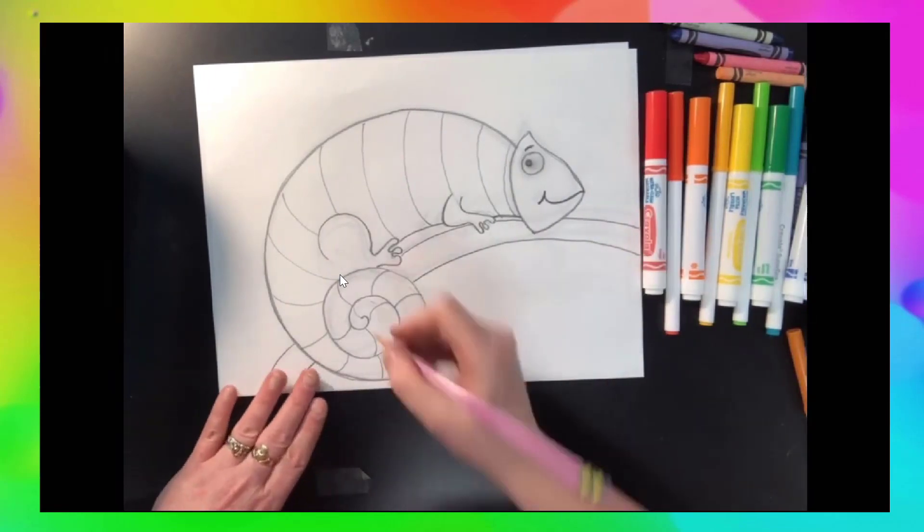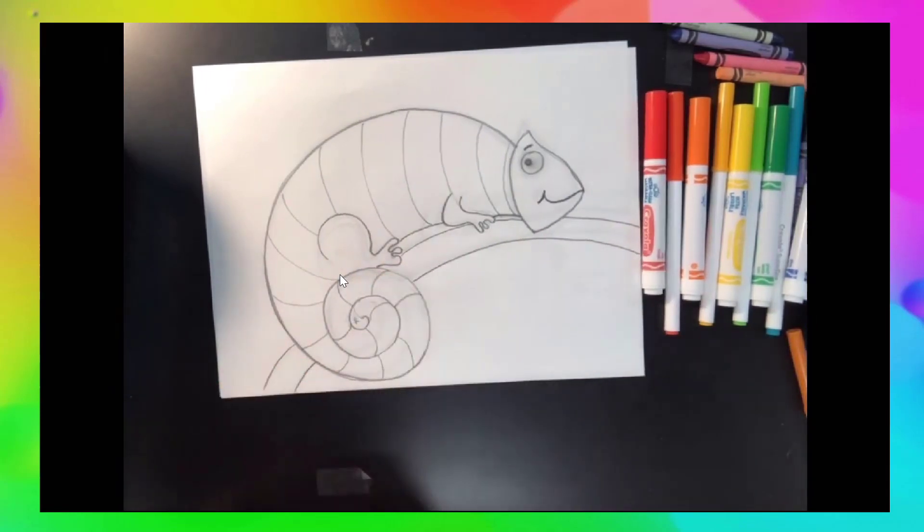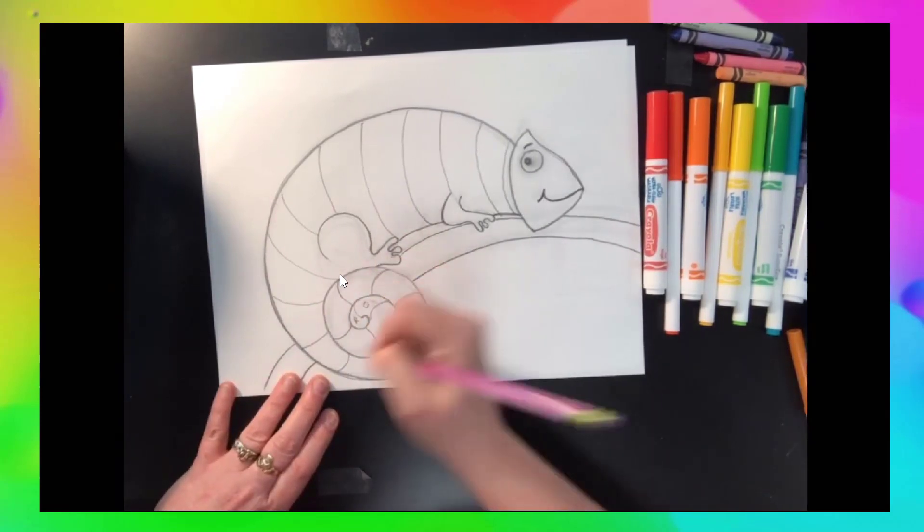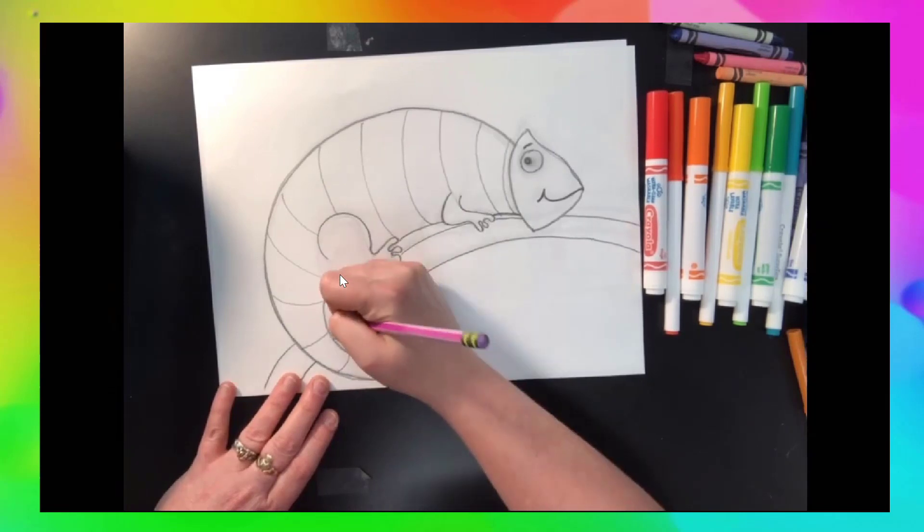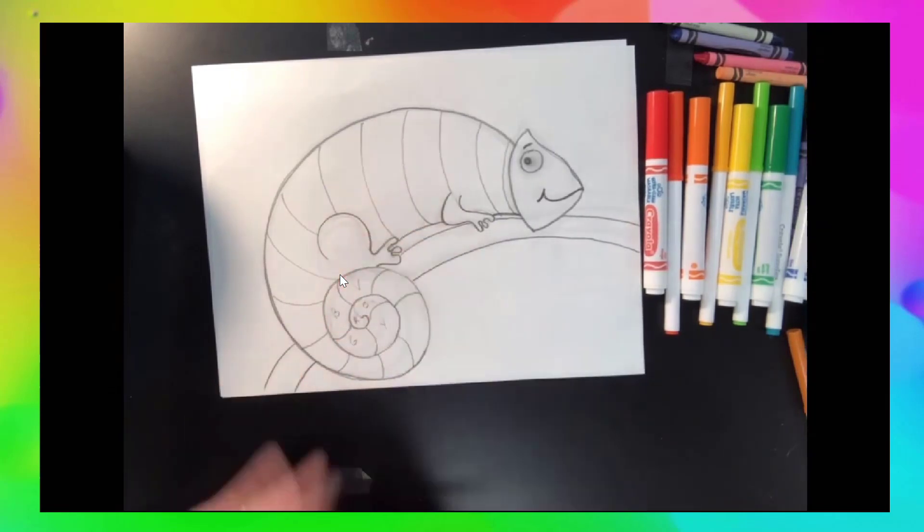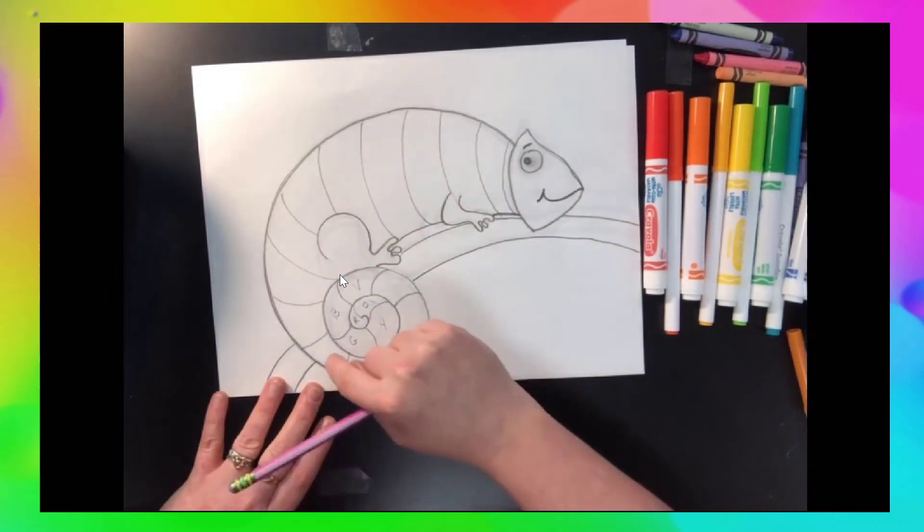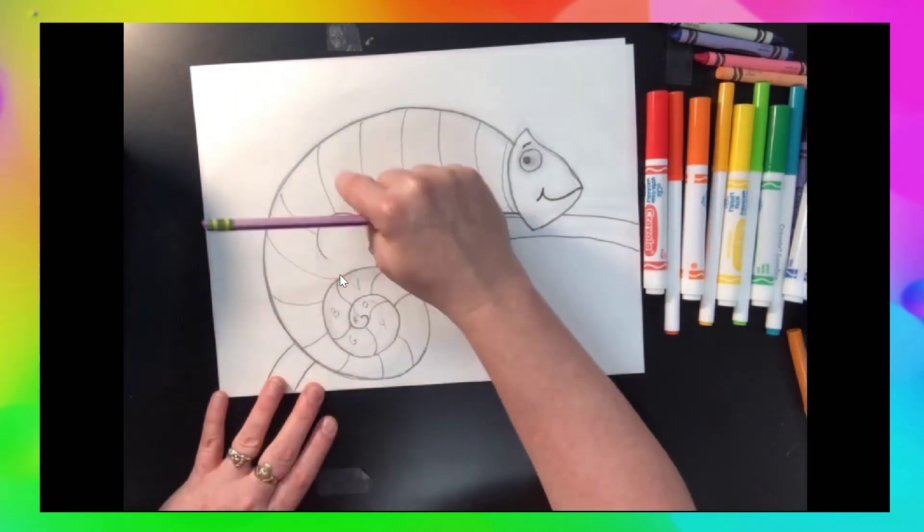The fun part is to go through and label all of these so you know what color you're going to put where. Red is the first color, so I'm going to start with a very light colored R right there. Red, orange, yellow, green, blue, violet. And then I would start over. Red, orange, yellow, green, blue, violet. Red, orange, yellow, green, blue, violet.